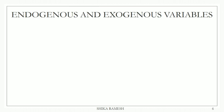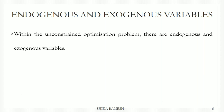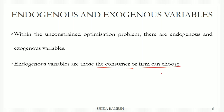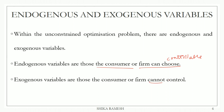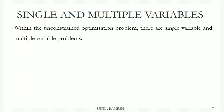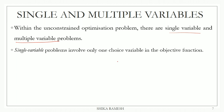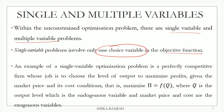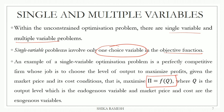The optimization problem involves endogenous and exogenous variables. Endogenous variables are those which the consumer or the firm can choose or control. Exogenous variables are the given variables that consumers or firms cannot control. In the optimization problem, variables are classified as single variable and multiple variable problems. Single variable problems have one objective function and one choice variable.